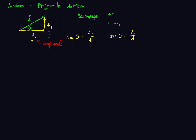So we're decomposing — we're getting the components of the vector. Solving these equations gives us: AX is equal to the magnitude of the vector times cosine theta, and AY is equal to A times sine theta. These are the two components.